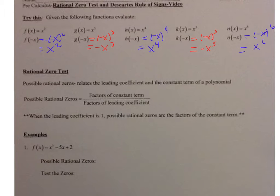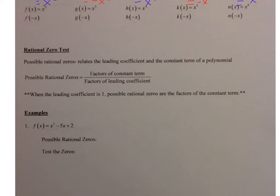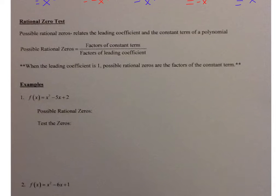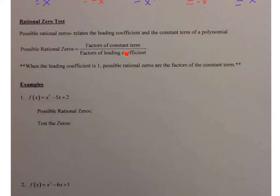Now let's talk about the rational zero test. Possible rational zeros relate to the leading coefficient and the constant term of a polynomial. Possible rational zeros equals the factors of the constant term divided by the factors of the leading coefficient. When the leading coefficient is 1, the possible rational zeros are just the factors of the constant term.